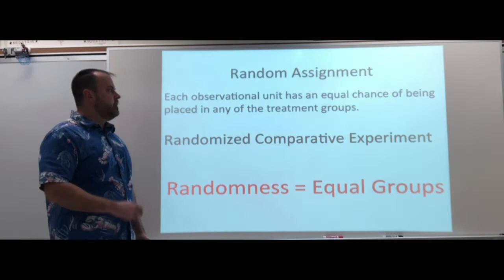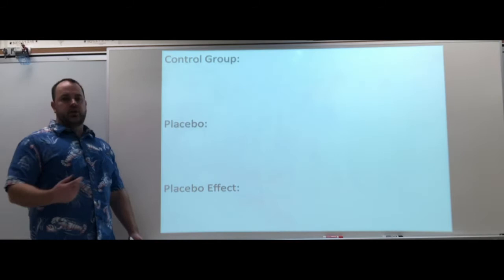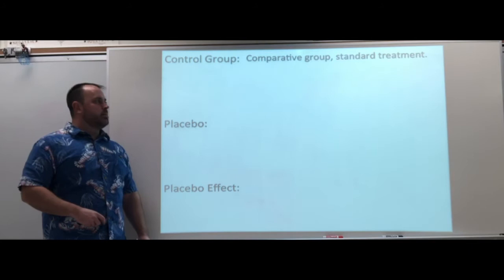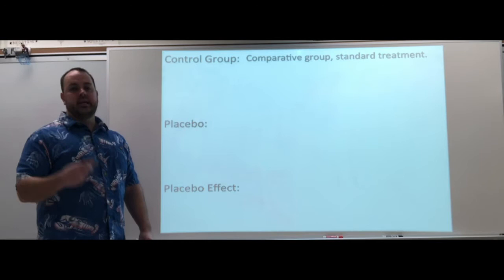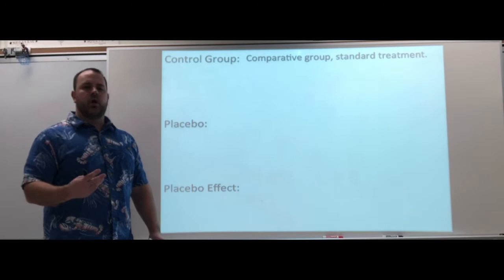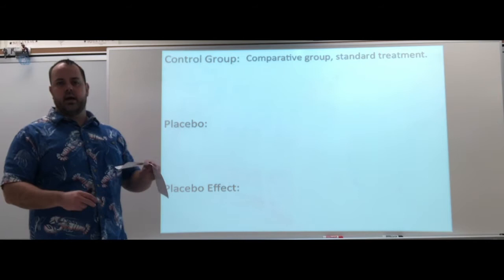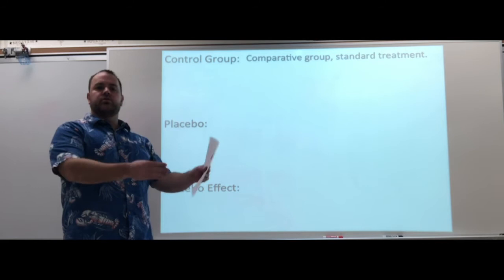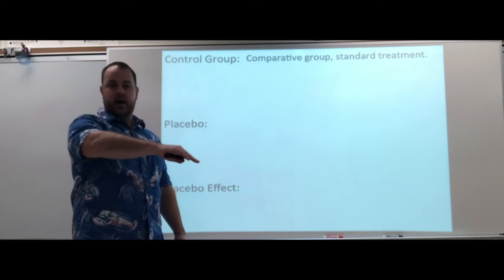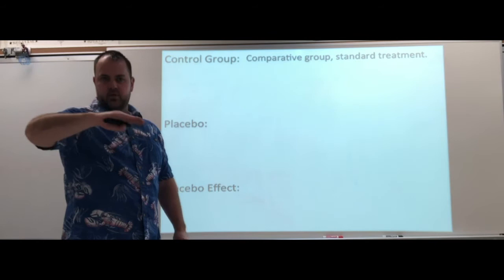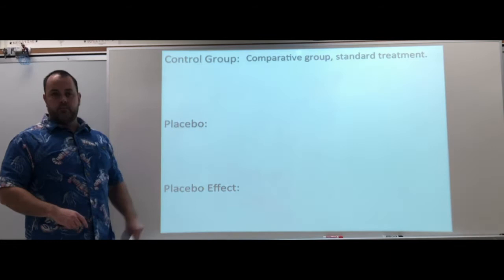Some things to think about when putting together an experiment: a control group, a placebo, and the placebo effect. For the control group, the most important concept is comparative. The reason we have a control group is so we can compare it with the group that is getting the treatment. The control group is like the status quo — it's not getting the treatment; it's the baseline. So we can then see: this is the group in their natural state, and this is what the response was. When we look at the group that took a supplement or medication, we can say their response went up or down compared to that baseline.